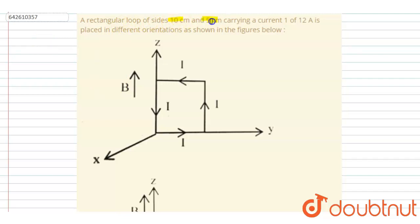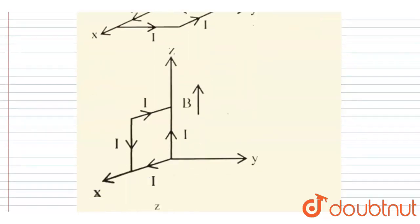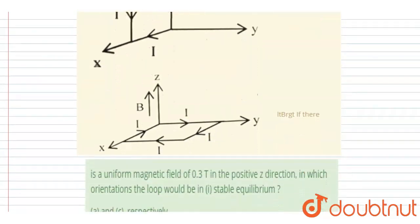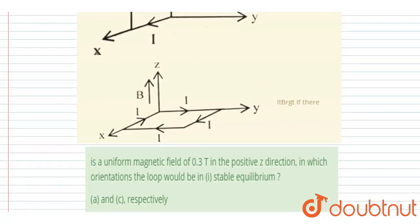side length this and this centimeter carrying a current of 12 amperes is placed in different orientations as shown in the figure. So these are the figures: first, second, third, fourth. You have to find out in which orientation of the loop stable equilibrium will be.